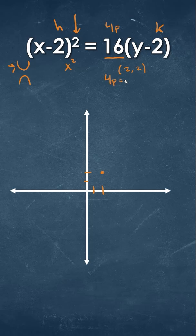So since 4p is going to be equal to 16, that's going to tell us that p is going to be equal to 4. So we'll go up 4 points from here. That's going to be where the focus is.